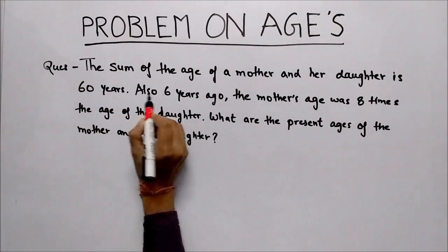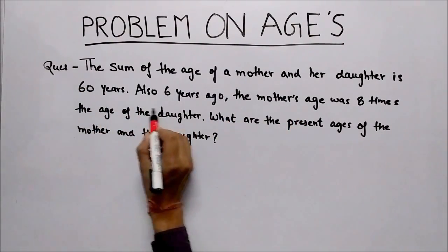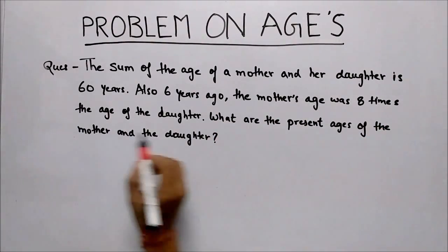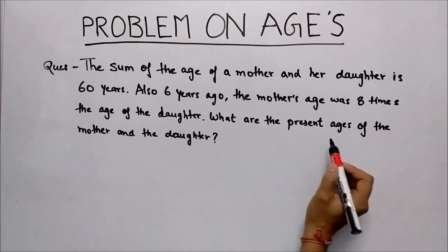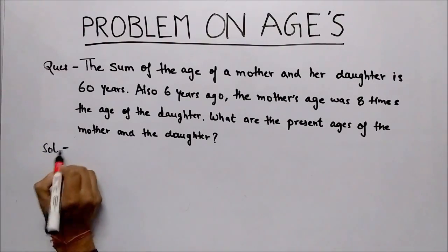The sum of the age of a mother and her daughter is 60 years. Also, 6 years ago, the mother's age was 8 times the age of the daughter. What are the present ages of the mother and the daughter? To solve this type of question,